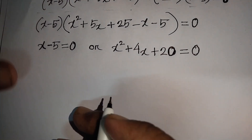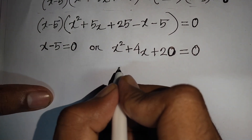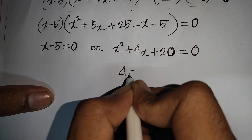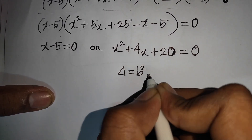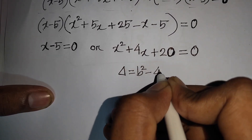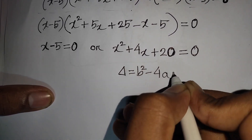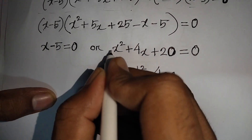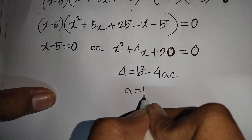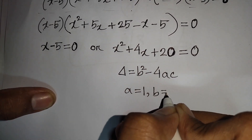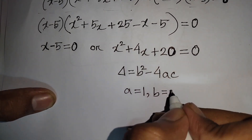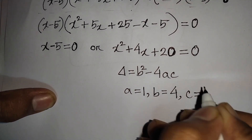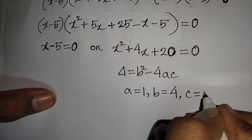Here we apply the discriminant formula: delta = b² - 4ac. Here a = 1, b = 4, and c = 20.